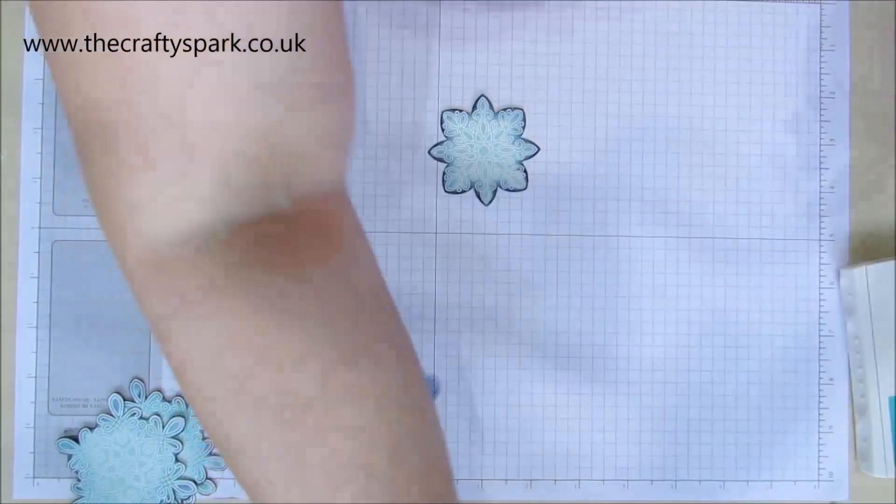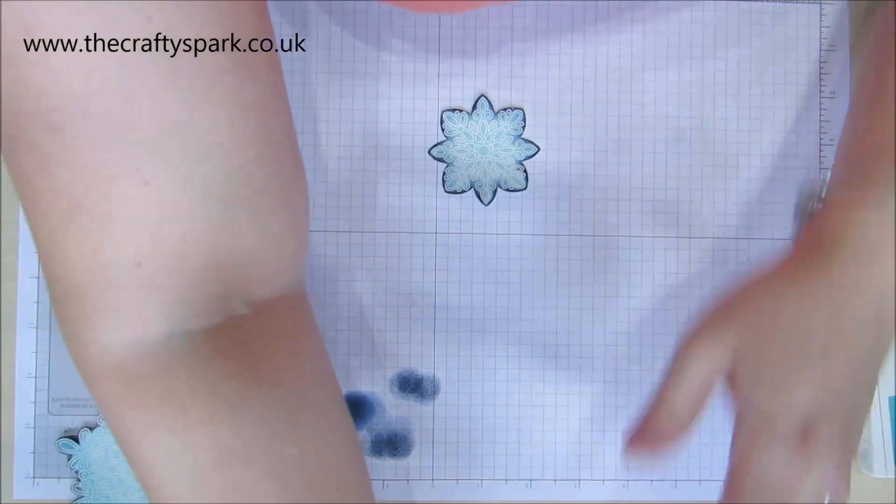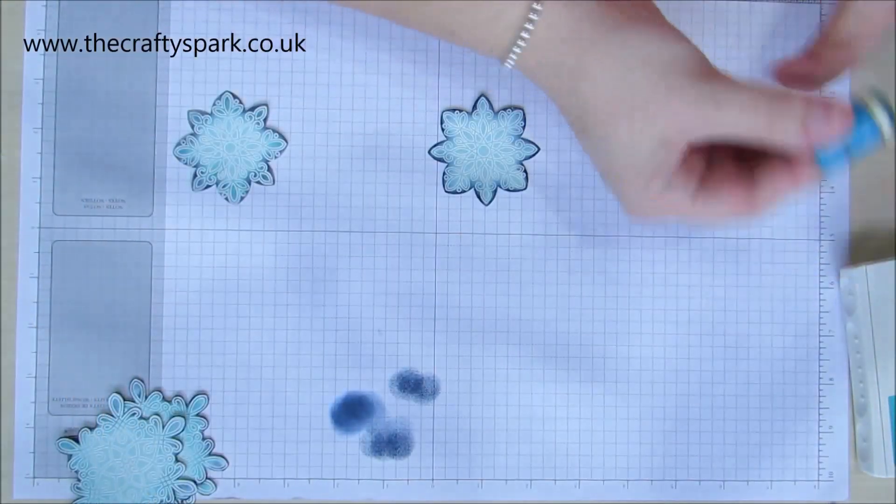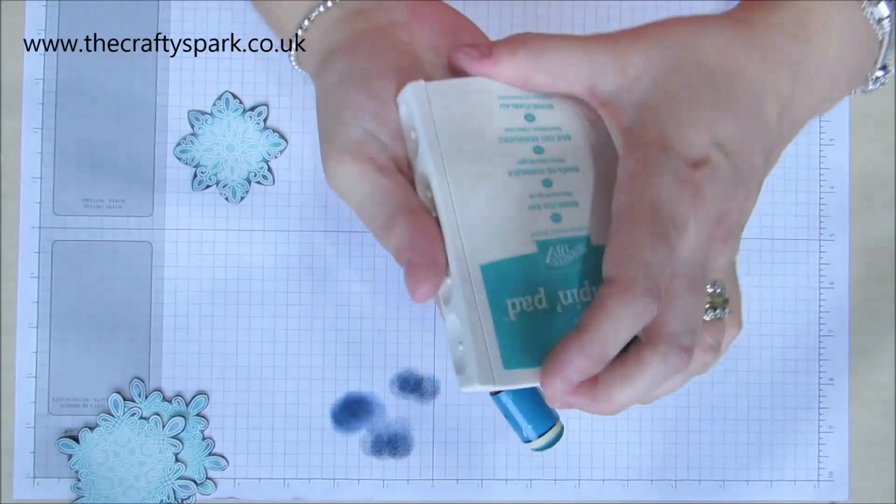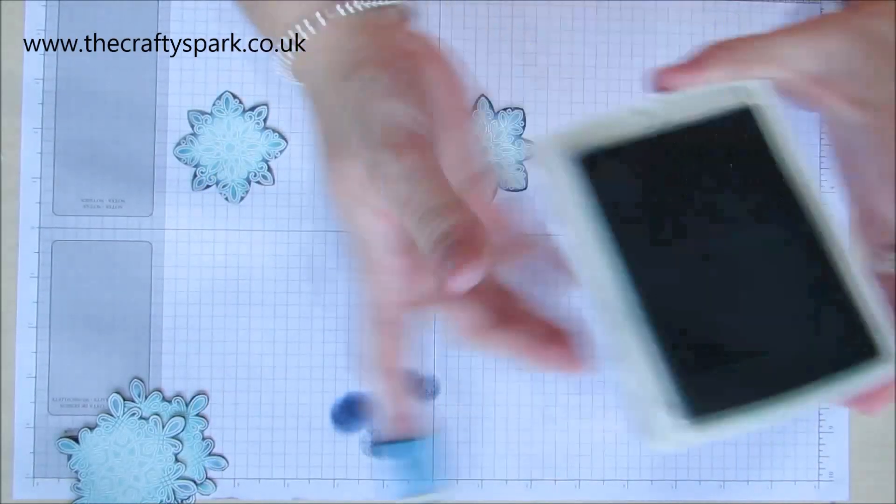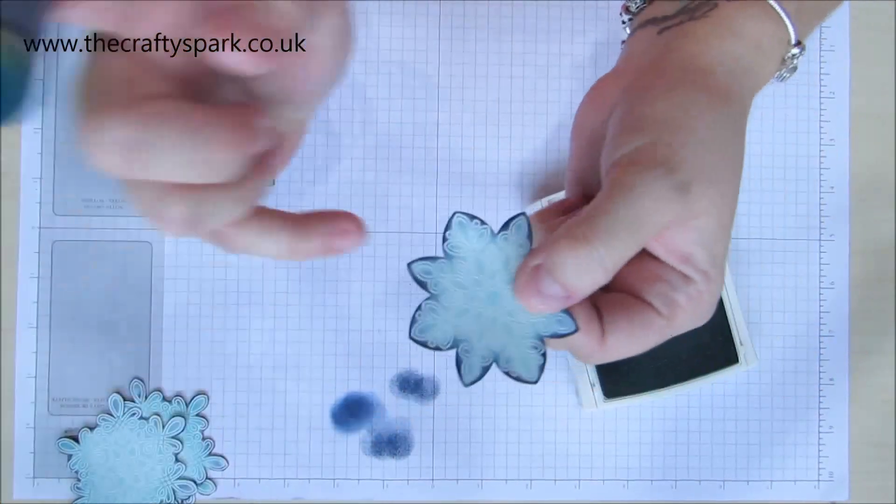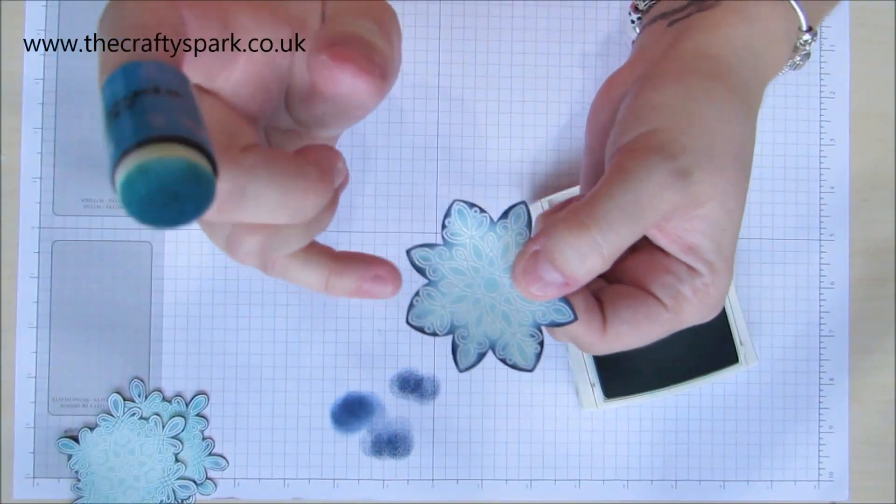Let's put that over there. I'm trying to keep tidy today. I'm a very untidy person so I'm trying to keep tidy. Right, now I'm bringing in some bermuda bay because we've got quite a contrast there and I want it to blend a bit more.